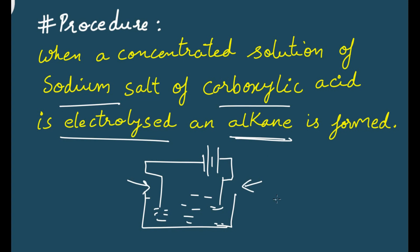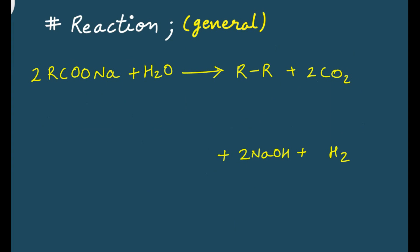Let's take a look at what happens in the general reaction. This is the general reaction: 2 RCOONa plus H2O. When this is electrolyzed, you will get R-R plus 2 CO2 at anode.